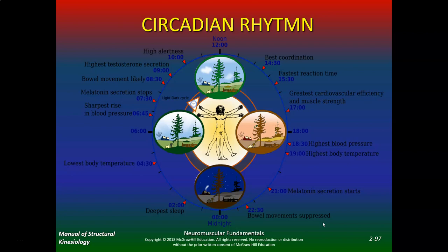Your highest blood pressure and body temperature start to wane through 5, 6, 7. Your melatonin starts to secrete around 9 to 10, and you're no longer likely to have a bowel movement after about 10:30 to 11. It's a very interesting circadian rhythm, and the reason I share this is because we're talking about the central nervous system and how everything is regulated. When things are not regular, that's where things can go wrong. Some of you who work the night shift may have a totally opposite rhythm.